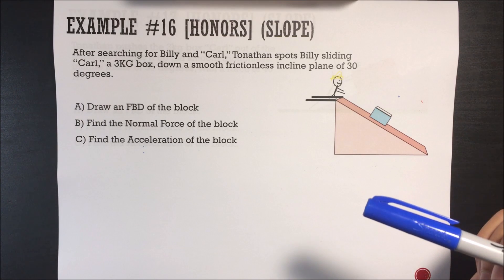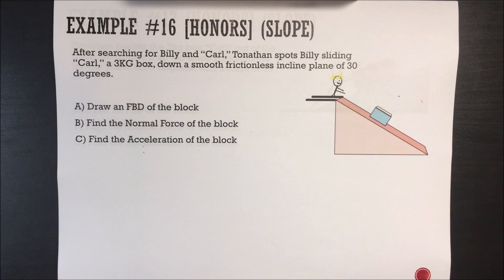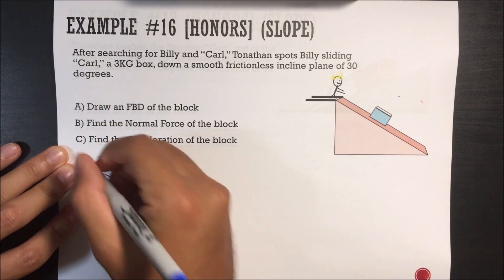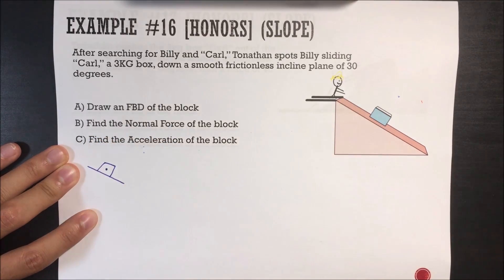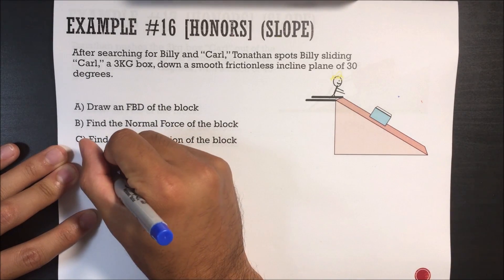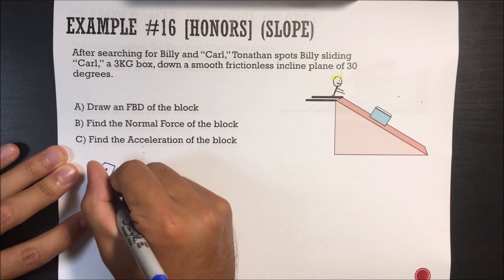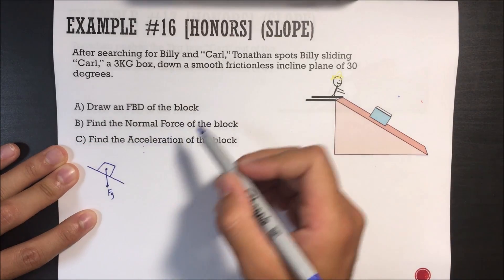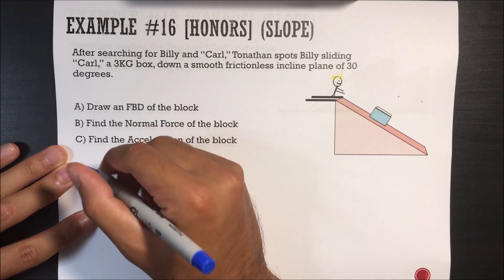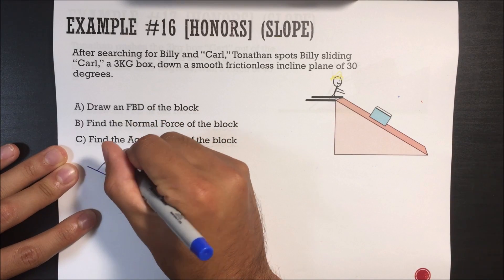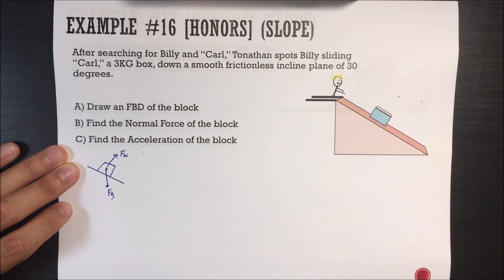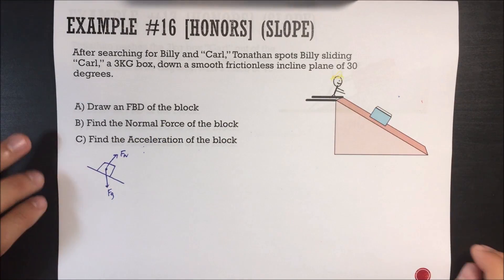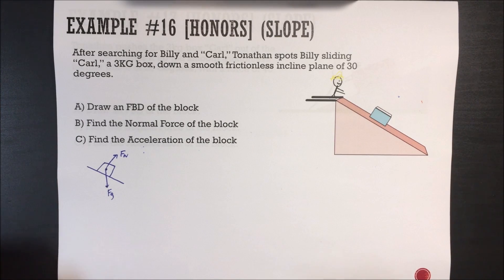These incline plane problems can be a bit difficult. Let's first start with the free body diagram. We see that the box is like this. The force of gravity is always going to be straight down. And the normal force is always going to be perpendicular, or 90 degrees, to the surface. In this situation, that's all there is — it's only gravity sliding it down and the normal force it's in contact with.